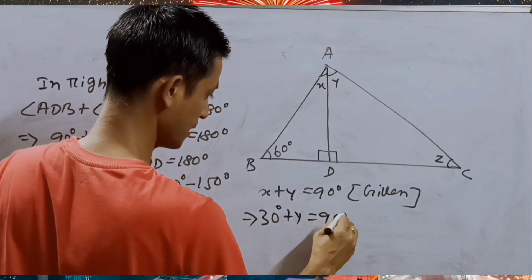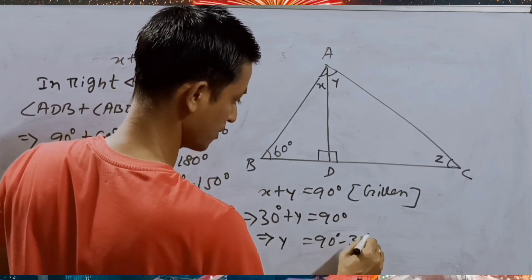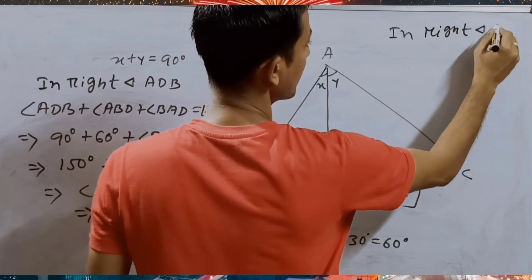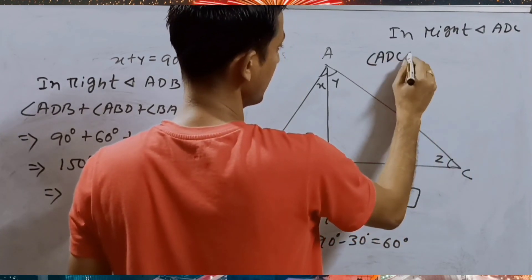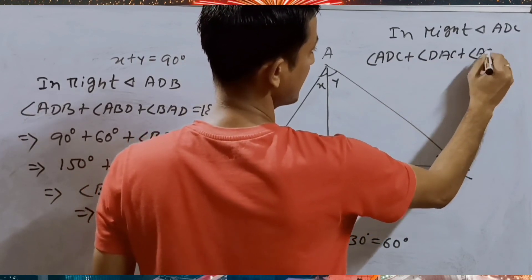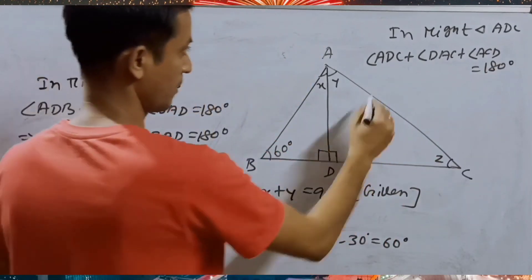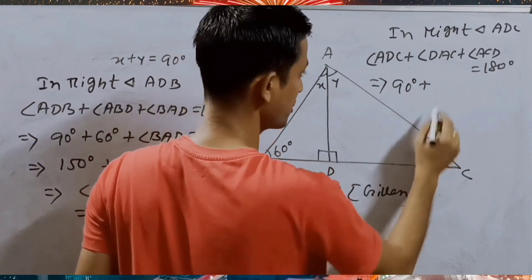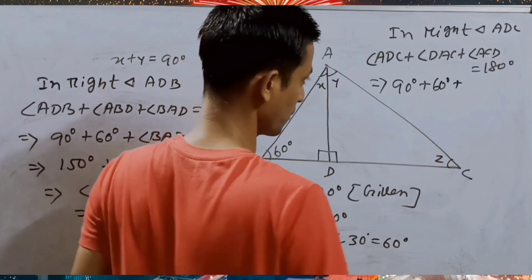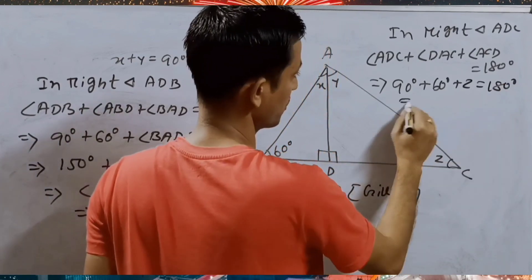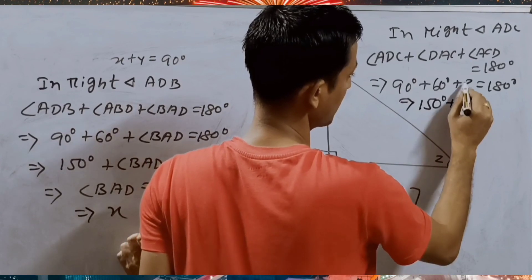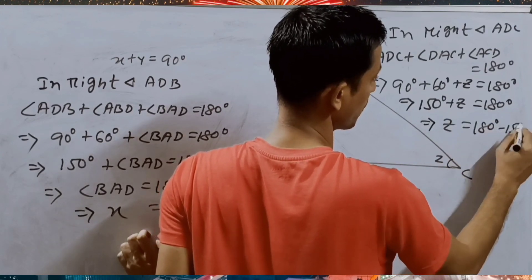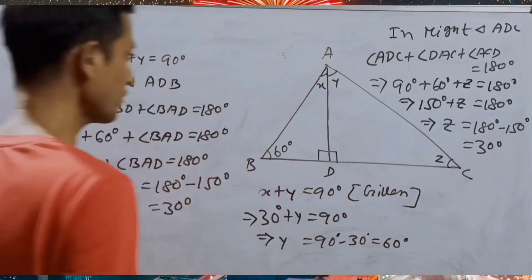Since X plus Y equals 90 degrees and X is 30 degrees, 30 plus Y equals 90 degrees, so Y equals 60 degrees. Now in right triangle ADC, angle ADC plus angle DAC plus angle ACD equals 180 degrees. ADC is 90 degrees, DAC is Y which is 60 degrees, and ACD is Z which we have to find. So 150 degrees plus Z equals 180 degrees. Therefore Z is equal to 180 minus 150 degrees, which is 30 degrees.